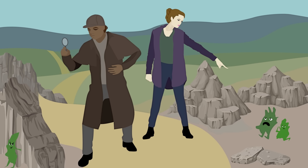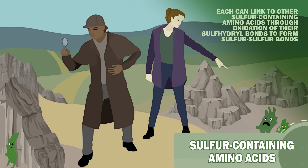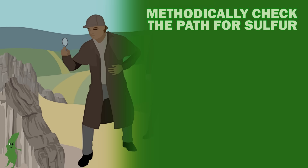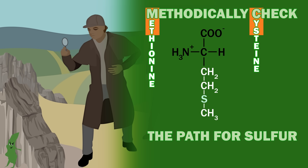There are two sulfur-containing amino acids, and they are special because each can link to other sulfur-containing amino acids through oxidation of their sulfhydryl bonds to form sulfur-sulfur bonds. An easy way to remember them is to methodically check the path for sulfur. Methionine and cysteine are the two sulfur-containing amino acids, with abbreviations being the first letter and first three letters of each. To get cysteine from methionine, you check between two rocks — the methyls — get rid of them, and all you're left with is sulfur.